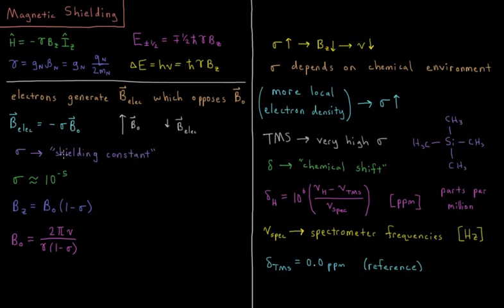Higher local electron density is going to generate a bigger sigma, and a more electron-deficient environment will generate a smaller sigma. So as I said, more local electron density means sigma goes up.